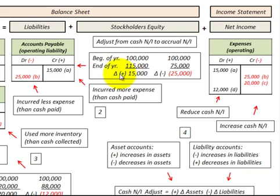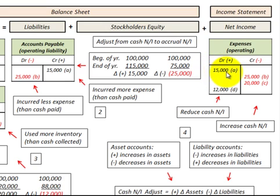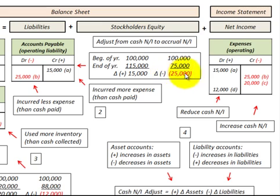Looking at liabilities — accounts payable. In the first example, we had an increase of fifteen thousand for the year, so we credit or increase accounts payable by fifteen thousand. This is where we incurred more expense than the cash that was paid, so the debit goes to expenses, increasing expenses by fifteen thousand and reducing cash net income.